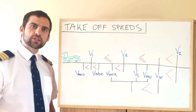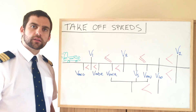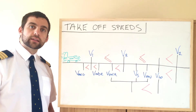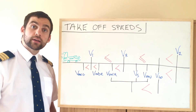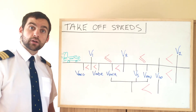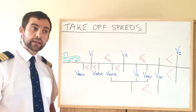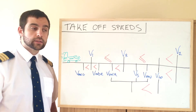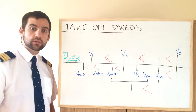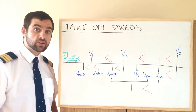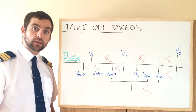So what conditions affect V-speeds? Well, V-speeds can be affected by an array of things: aircraft configuration, aircraft weight, gross weight, performance, runway characteristics, runway condition, and atmospheric conditions.